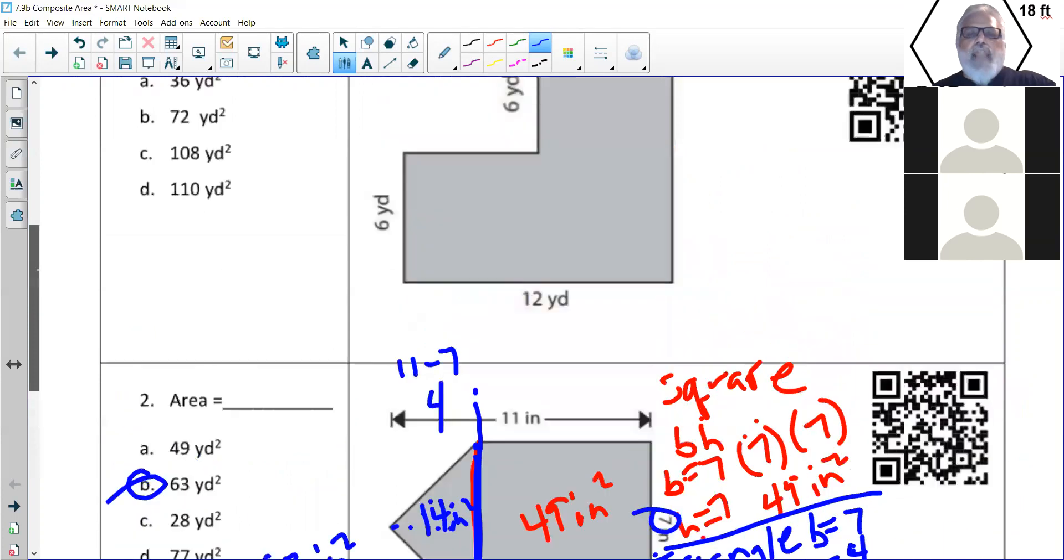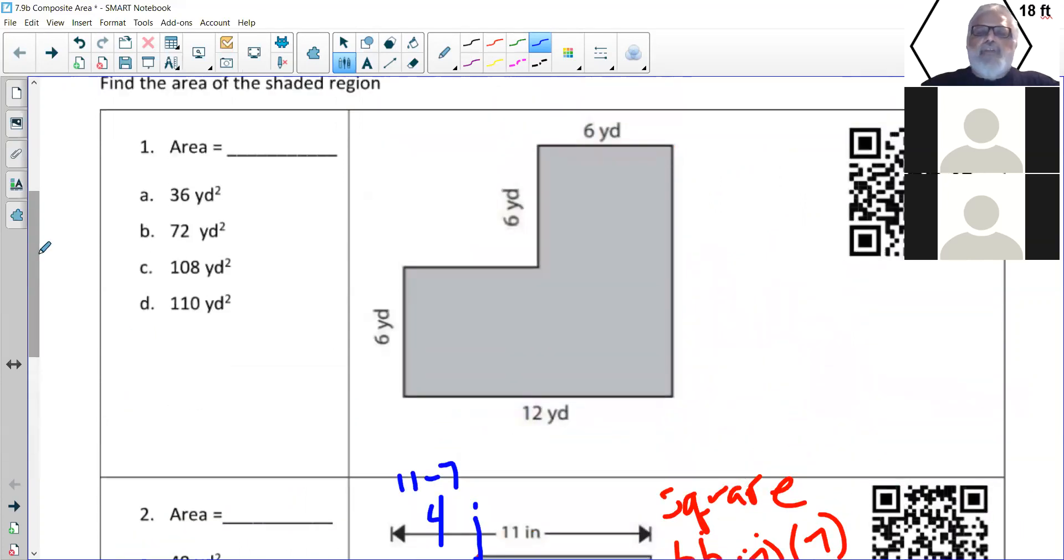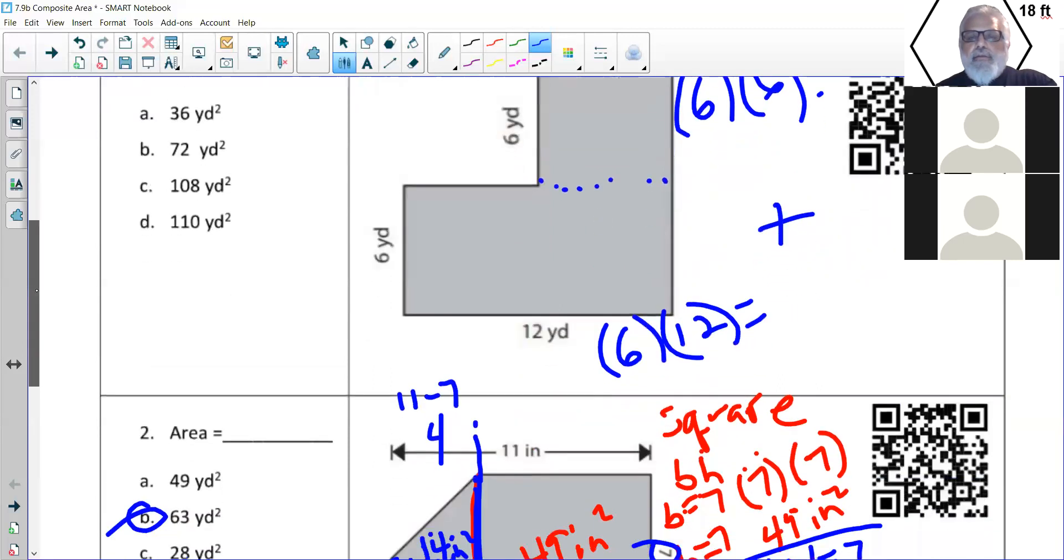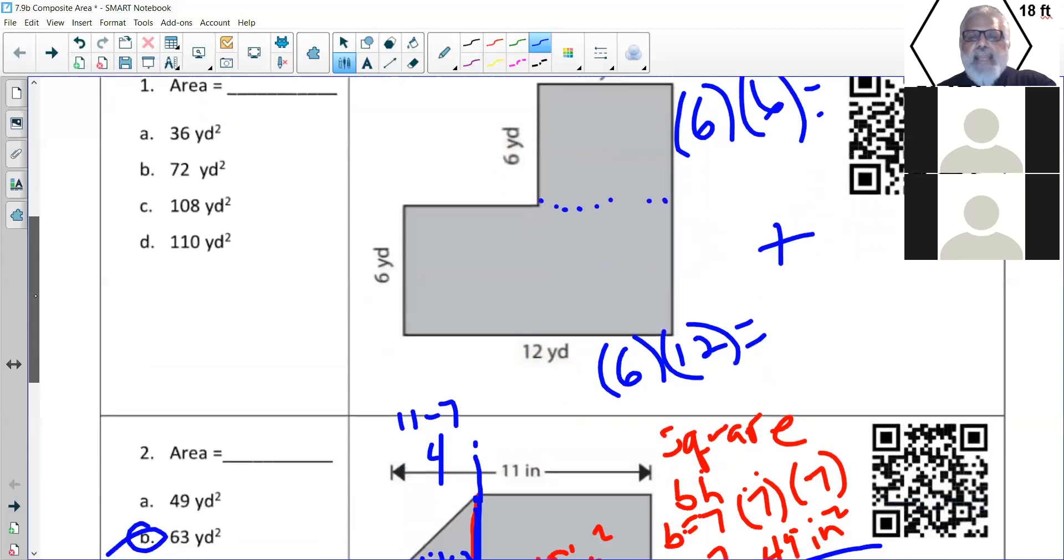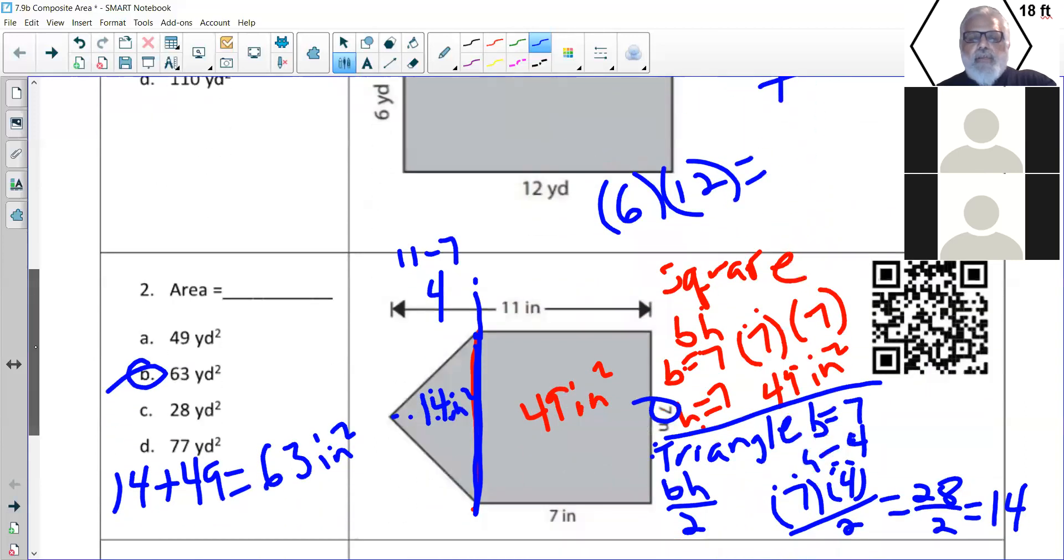So in this case, since they're both gray, we add. So my last step is gonna be 14 plus 49, which is gonna be equal to six inches squared. Got it? Yeah. Make sure you get that written down. So like on these guys, that's what you're gonna do. You're gonna have a square which is six times six. You're gonna have a rectangle which is gonna be six times 12. And then whatever you get, you're gonna add them. Because everything is grayed.